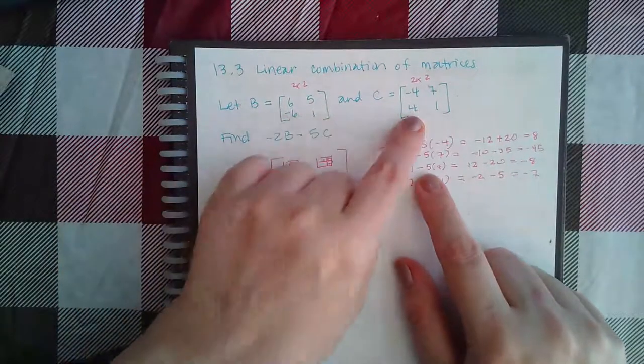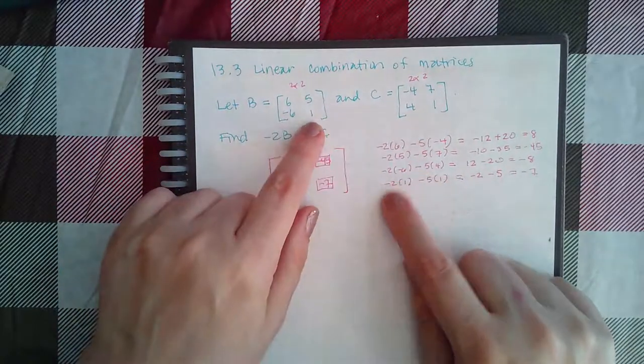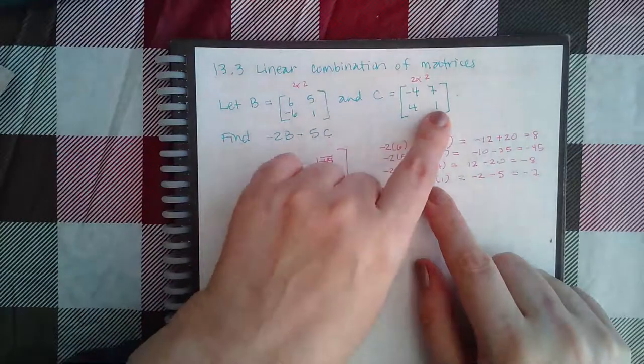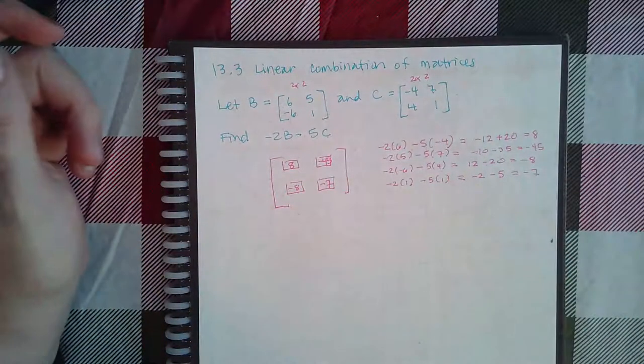Negative two times negative six, negative five times four. Negative two times one, negative five times one. Again, do the computations and you get your results.